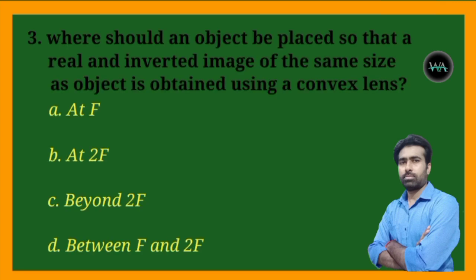Next question: where should an object be placed so that a real and inverted image of the same size as the object is obtained using a convex lens? At f, at 2f, beyond 2f, or between f and 2f?